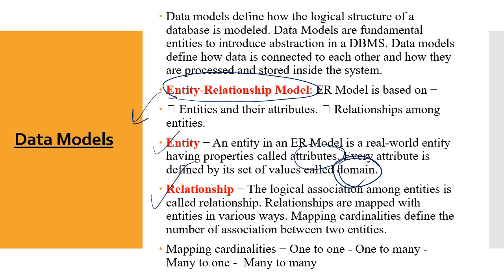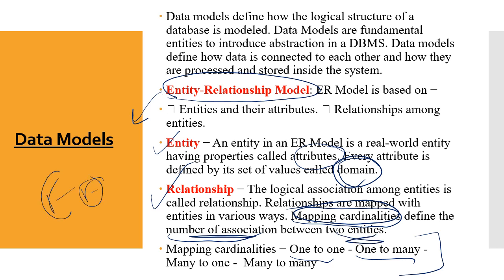In a database management system, relationships follow different associations: one-to-one, one-to-many, many-to-one, and many-to-many. These associations are called mapping cardinalities — remember this word. Mapping cardinalities means the number of associations between two entities. So two entities can have a specific number of associations with each other, and this whole structure is what we call mapping cardinalities in database management.